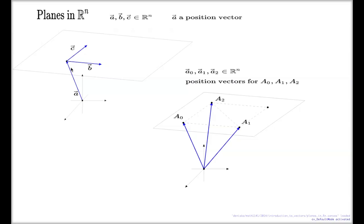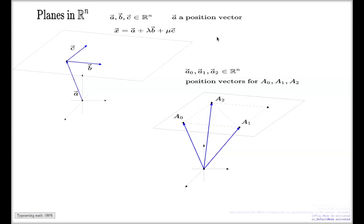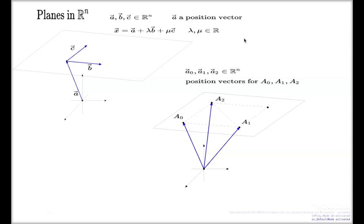Given this three-vector set, the formal expression is called the parametric or vector equation of the plane. It uses two Greek letters λ and μ as parameters, similar to the parameter t we used for lines — it's just more conventional to use Greek letters here. We need two parameters this time rather than one.